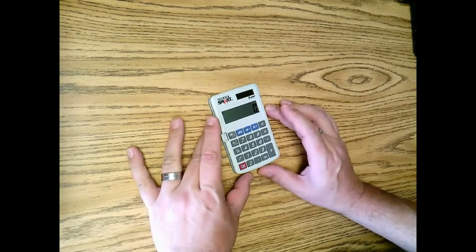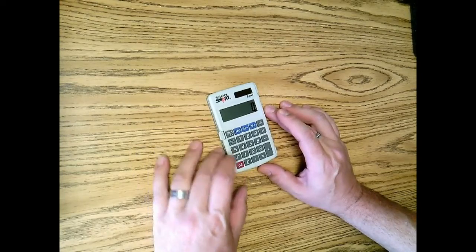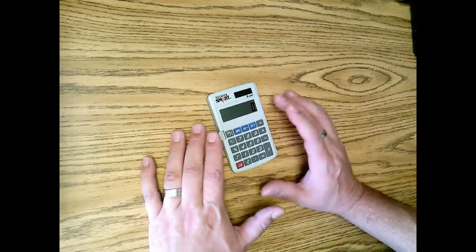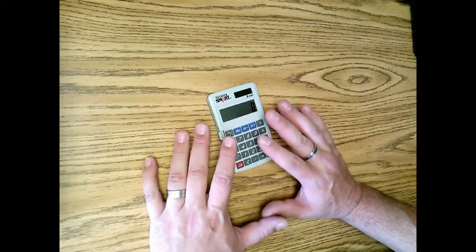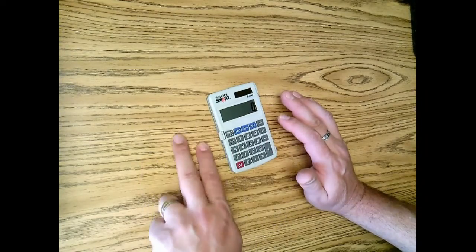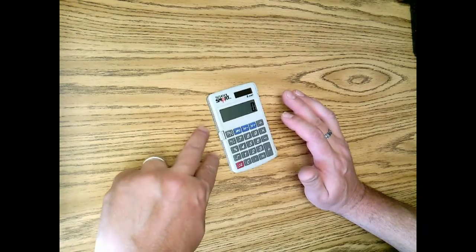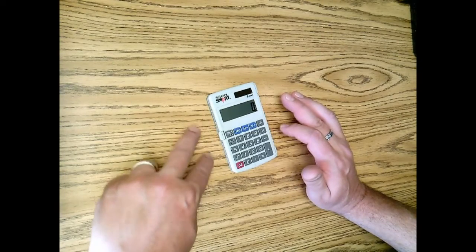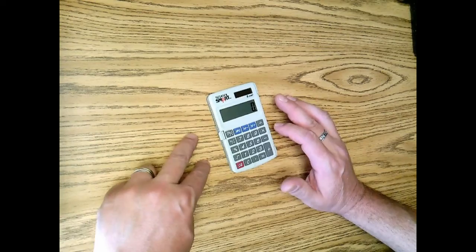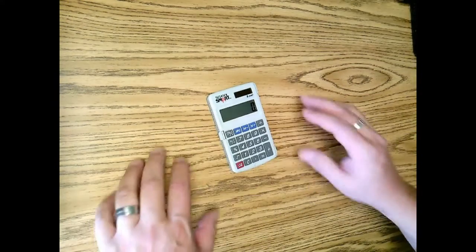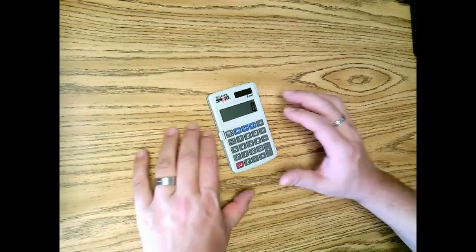So the clear entry button is actually if you enter multi-step. Now unless you really get comfortable with the calculator, I would suggest doing two numbers at a time, whether it's addition, subtraction, multiplication, division, whatever operation you're going to be doing. And then write down that product or that sum or the difference, whatever operation you're doing.